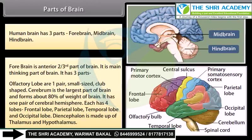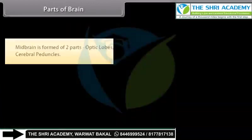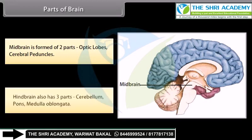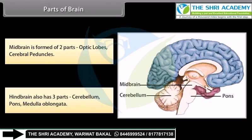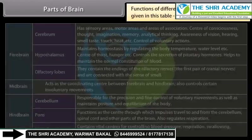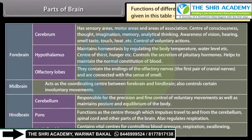The midbrain is formed of two parts: optic lobes and cerebral peduncles. The hindbrain also has three parts: cerebellum, pons, and medulla oblongata. The functions of the different parts of the human brain are as given in the table.